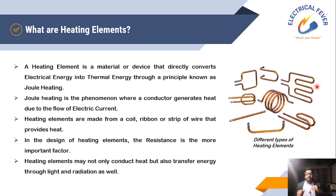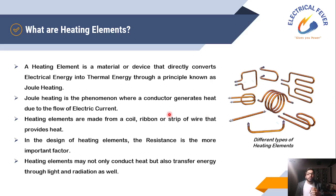Depending on the application, you can see which type of heating element you can use. For example, in electrical water heaters this heating element is present. Water heaters use the heating element to convert electrical energy to thermal energy — that is Joule heating. The heat power is equal to I squared into R.